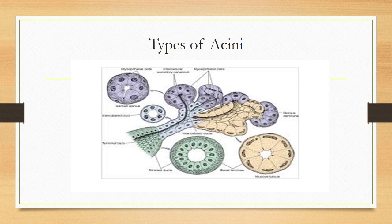In serous acini, the cells are pyramidal shaped with a spherical nucleus towards the base. They have a lot of basal striations and apical granules that store the secretions. Every cell is surrounded by modified myoepithelial cells which help in the contraction of individual cells to secrete into the lumen. The serous acini are eosinophilic — they stain pink with the H&E stain — because of the stored serous secretion granules, which are then poured into the lumen.